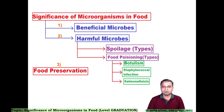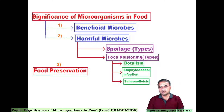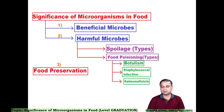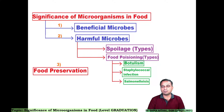Today's lecture covers beneficial microbes. Next we will be seeing harmful microbes, and in that: spoilage, types of spoilage, food poisoning, types of food poisoning — in which your syllabus is restricted to three food poisoning aspects: botulism, staphylococcal infection, and salmonellosis. A totally different topic will be food preservation, which will form the part of my third lecture, and thus your unit will be completed.